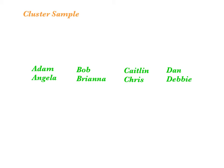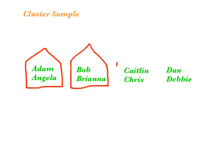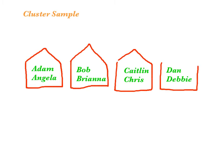Let's talk about cluster sampling. Cluster sampling is another method of random sampling, but this time the members of the population are already in clusters or groups. Let's pretend that the same 8 names from before are living together in houses. We still need to use some level of randomization, so we'll number the clusters instead of the individuals. We'll number our houses 0, 1, 2, and 3.